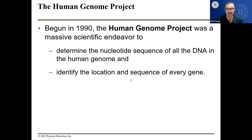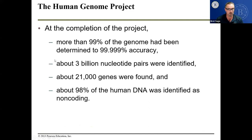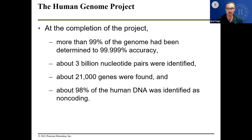Begun in 1990, the Human Genome Project was a massive scientific endeavor to determine the nucleotide sequence of all the DNA in the human genome and identify the location and sequence of every gene. More than 99% of the genome was determined to basically 100% accuracy. Three billion nucleotide pairs were identified and 21,000 genes were found. This is the foundation of the company 23andMe, which has now merged with Ancestry.com.